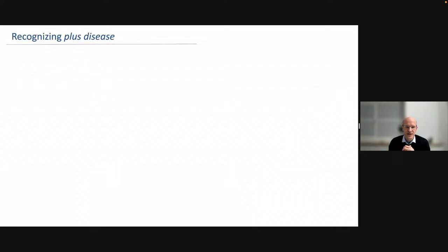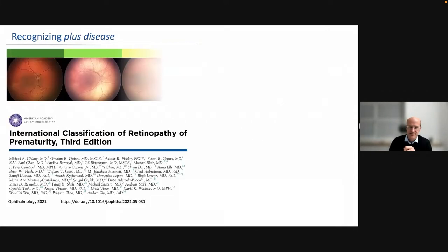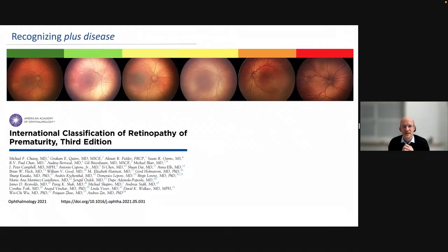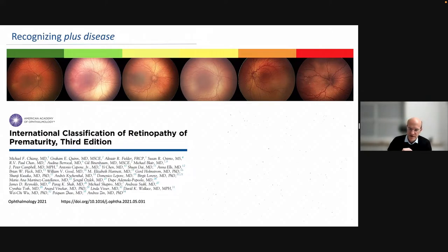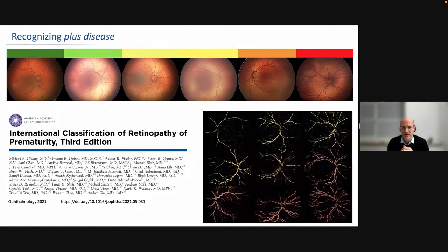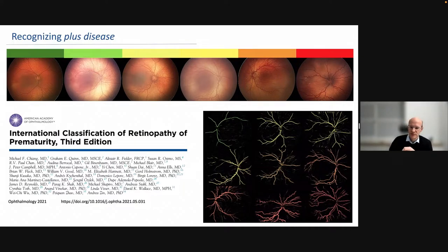In the last iteration of the iCrop definition of PLUS disease, we moved away from a single standard photograph and defined PLUS disease more as a spectrum — from normal on the left-hand part of the panel to really severe disease on the right. If you take these images and tease out the important patterns — just the vessels, looking at tortuosity and dilatation — clearly, just from looking at the bottom part of the screen, you can see this is something that should be very good for a computer to analyze, maybe better than for a human brain.